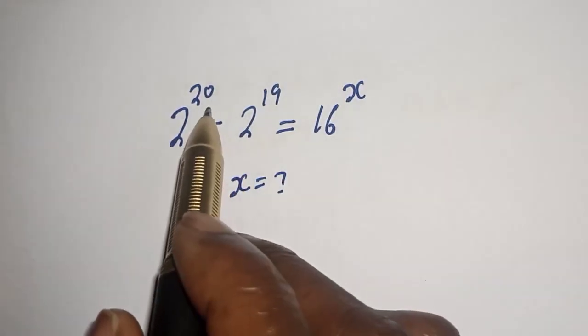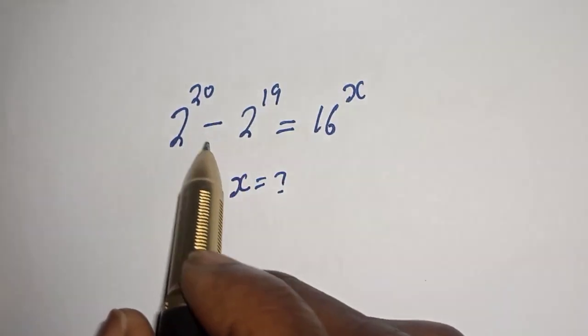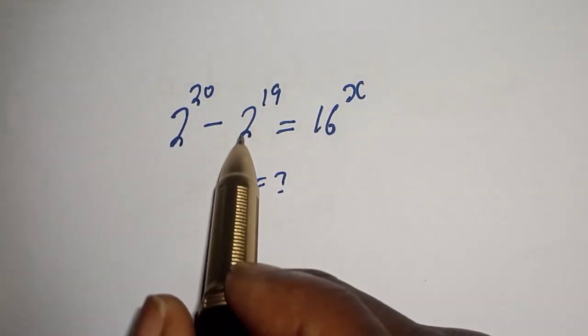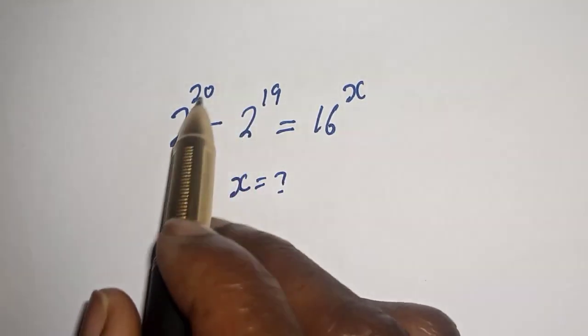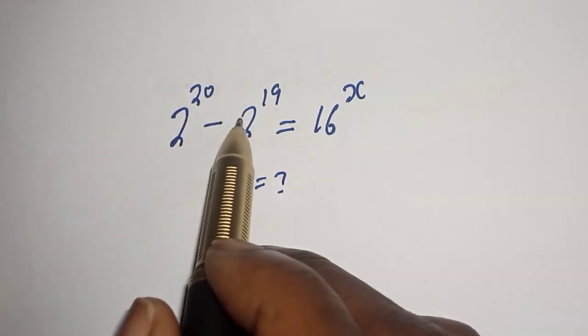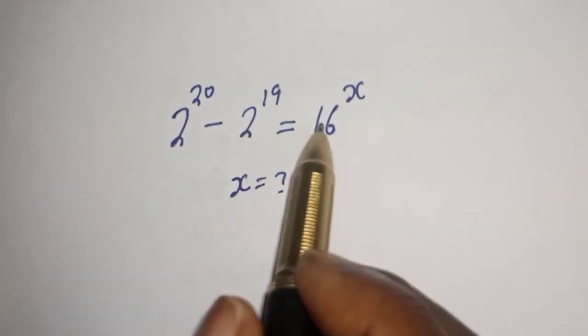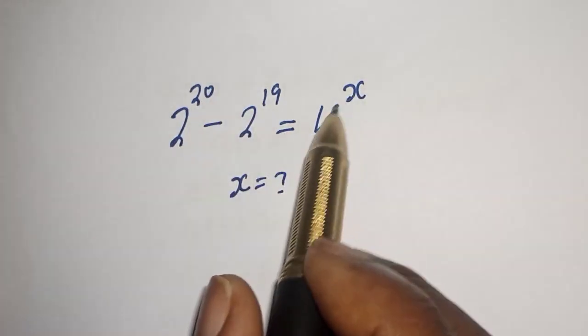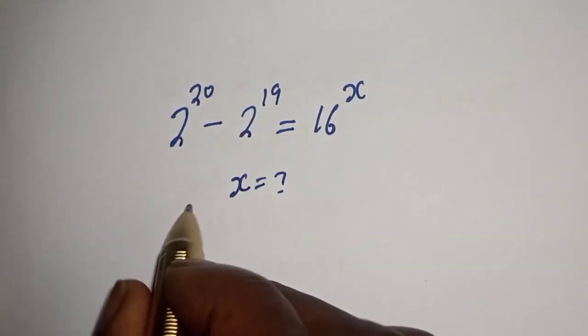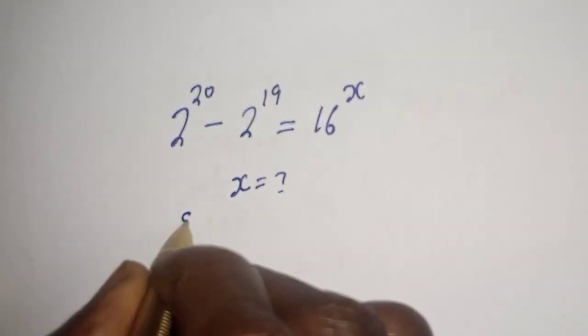Hello, welcome to Manjis. In this class, I want to find the value of x from this equation: 2 raised to power 20 minus 2 raised to power 19 is equal to 16 raised to power x.